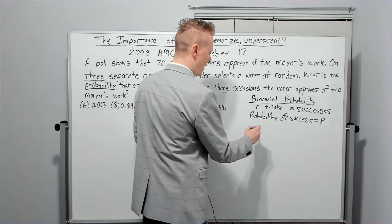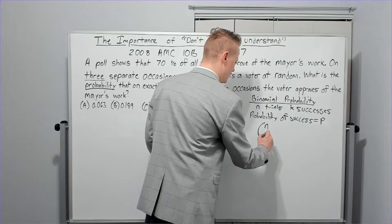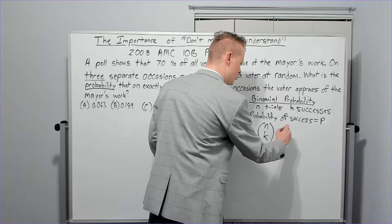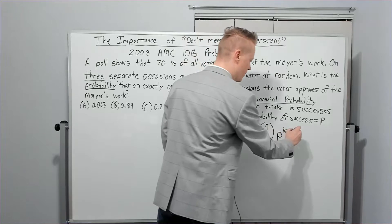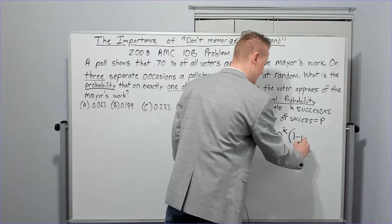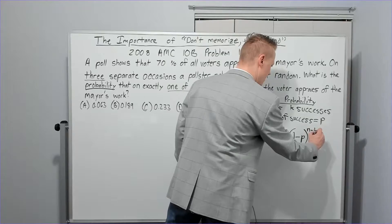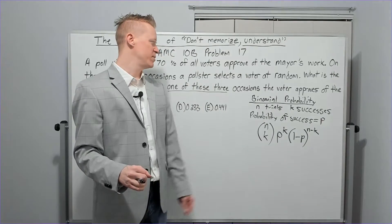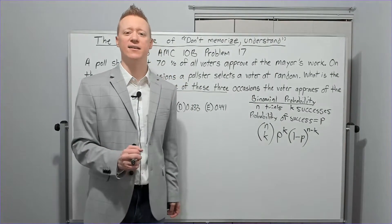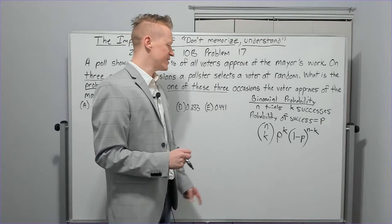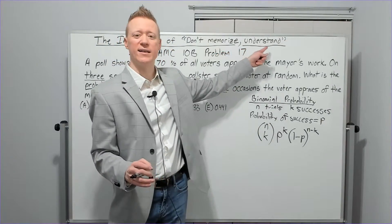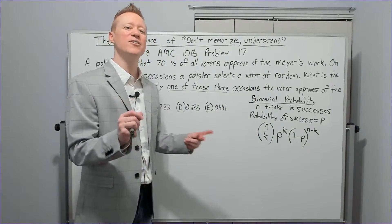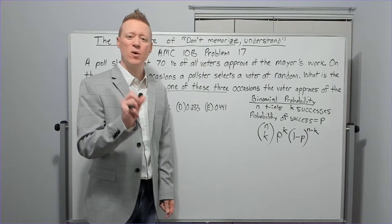So then how would this work? The formula looks like this: N choose K times the probability of success to the power of K, and then the probability of failure, one minus P, to the N minus K. Now this is the formula. And if you just memorize this, you would probably be able to apply it to any situation that has exactly two outcomes. Let's see why it works though. This is the part that we want to get to, the understanding. We don't just want to see this and be able to apply it. You want to understand why it works. This is why they stress this. Let's see it.